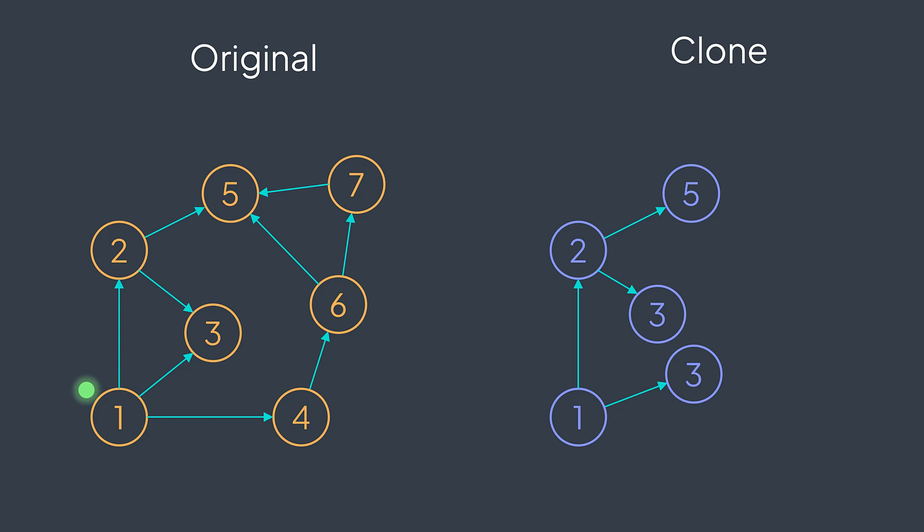But in a graph with our solution, every time we go to the node with value three, for example, we clone it again, which results in different nodes for the same value. How to fix this?